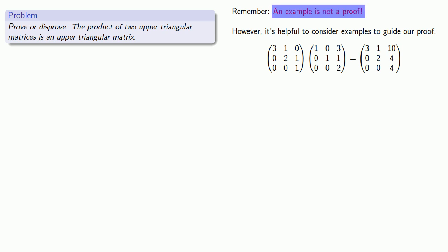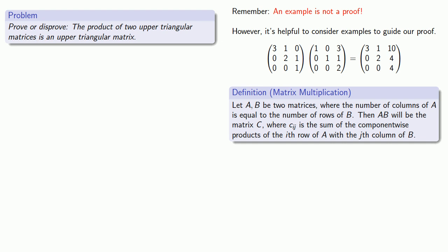But again, an example is not a proof. Now, since we're trying to prove something about the product of two upper triangular matrices, we might need to pull in our definition of product of two matrices and upper triangular matrix.